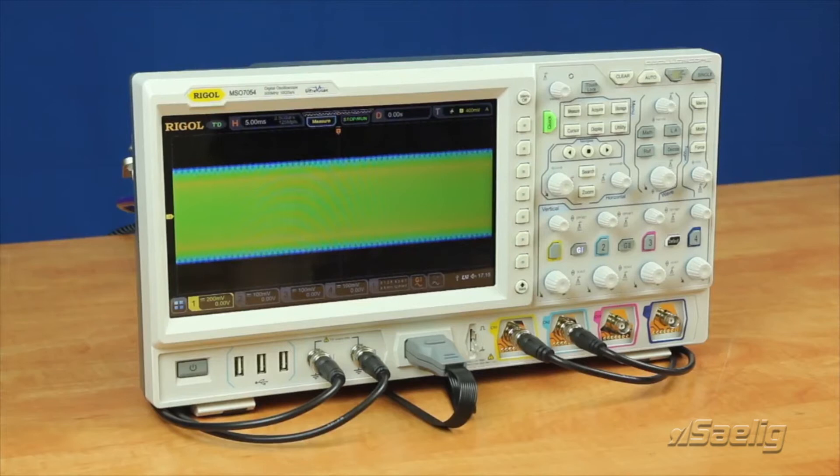The ability to make precise measurements is an important feature of the new 7000 series oscilloscope.